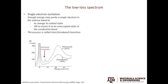We can also look at the plasmon peak and study the single electron excitation. Single electron excitation happens when there is enough energy to excite a single electron in the valence band to either change the orbital state or to move it to an unoccupied state in the conduction band. If this happens, you will see the interband transition as shown here. In this example, polystyrene has the interband transition but polyethylene doesn't. If you have a copolymer, you can map the interband transition to tell you where the polystyrene is and where the polyethylene is.